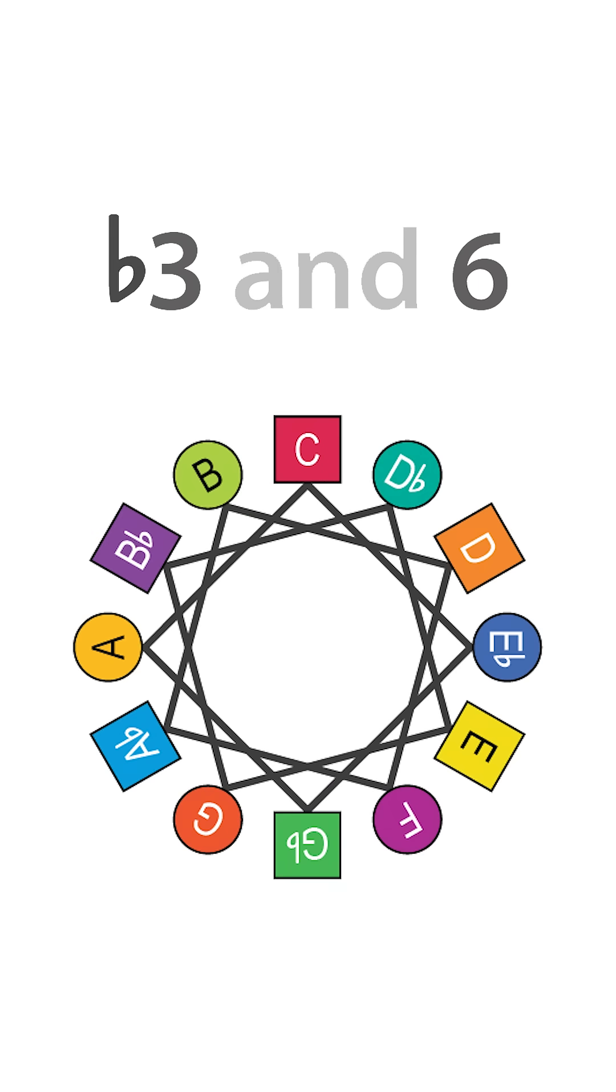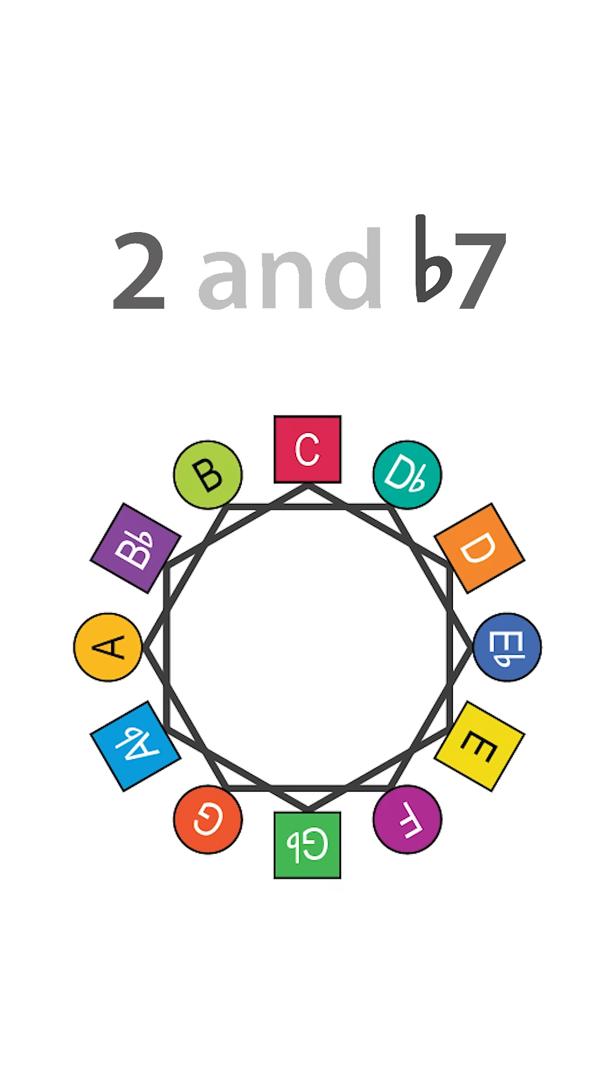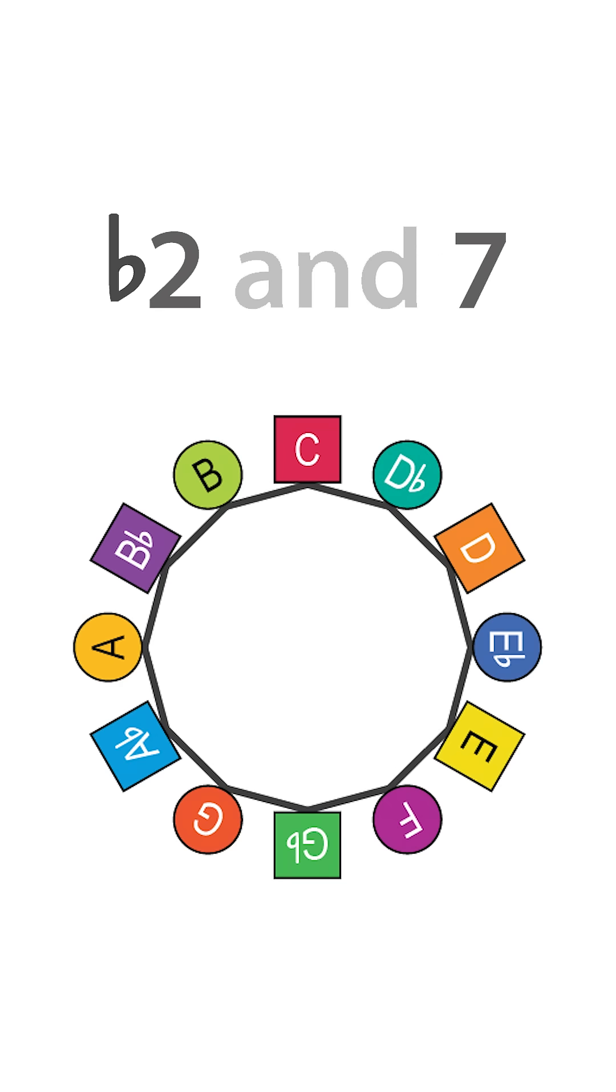Intervals flat three and six make squares like this. Intervals two and flat seven form hexagons. And then intervals flat two and seven combine to make a dodecagon.